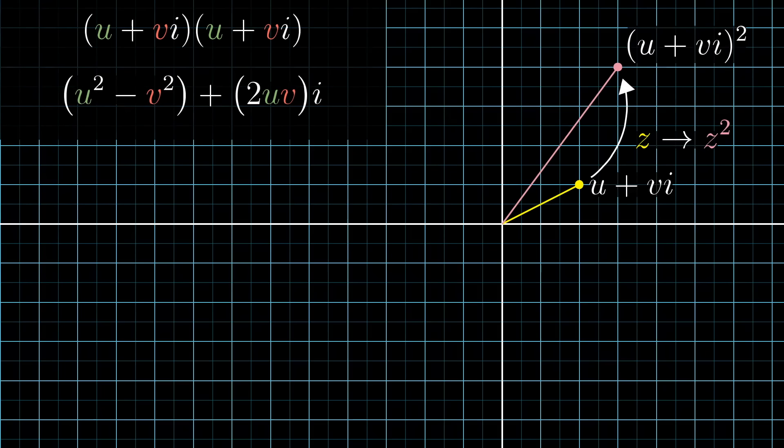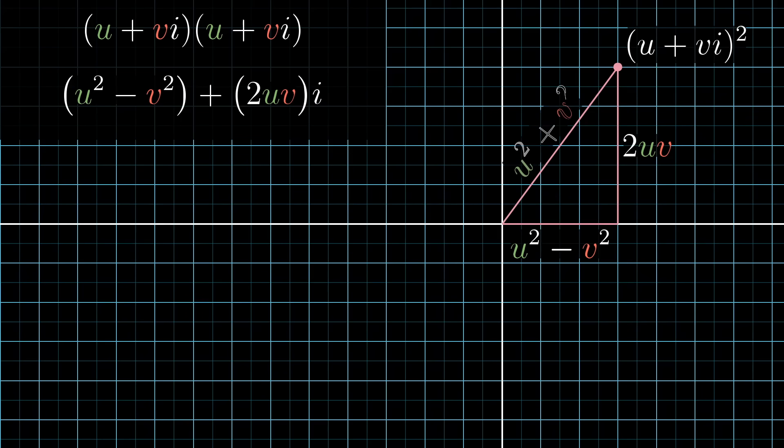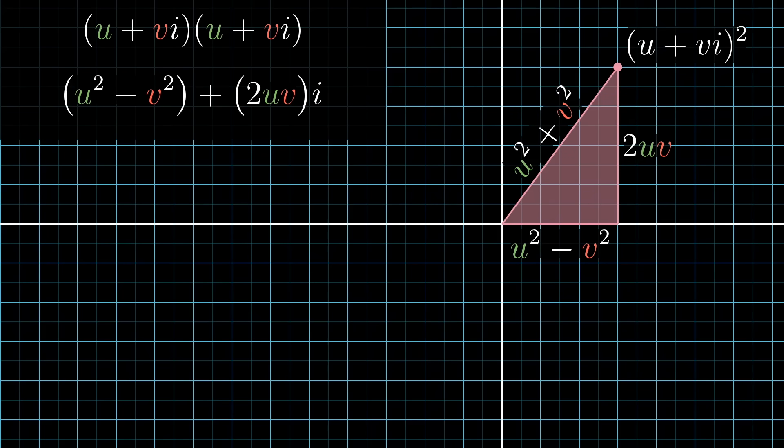If you write the coordinates of your initial point as u and v, then when you work out u plus vi squared, the real part is u squared minus v squared, and the imaginary part is 2 times uv. The resulting distance from the origin is going to be u squared plus v squared.